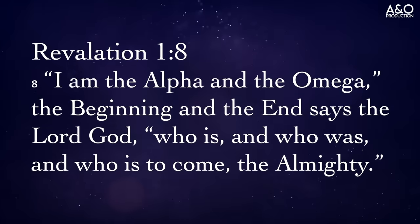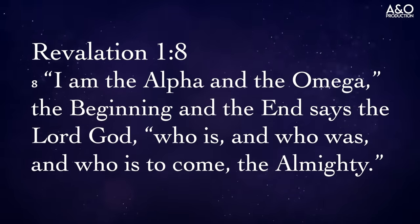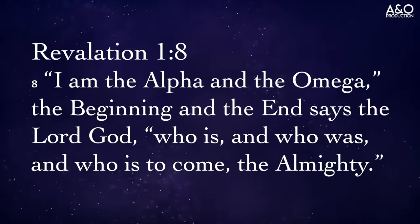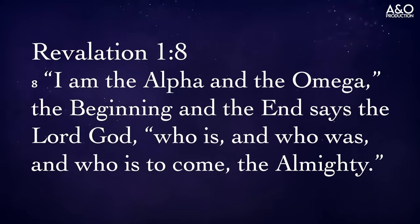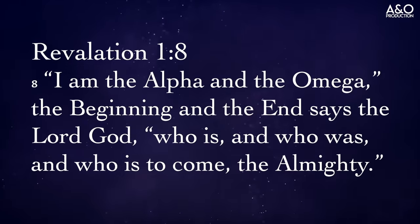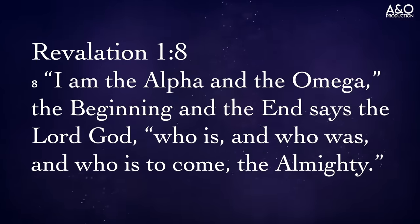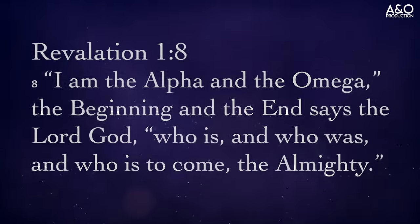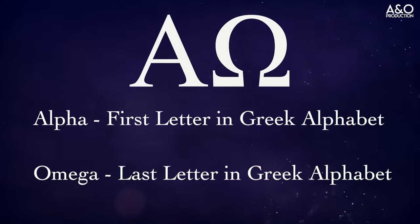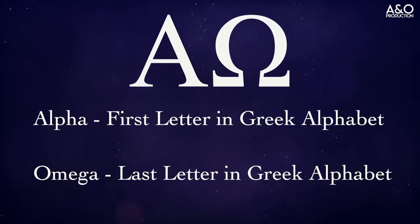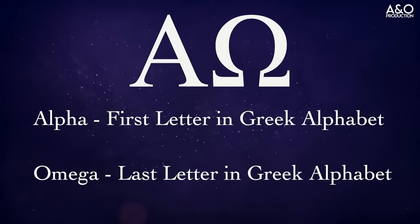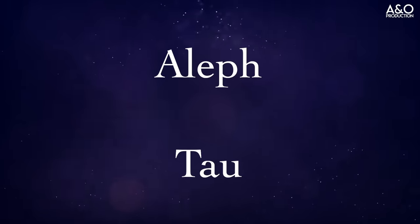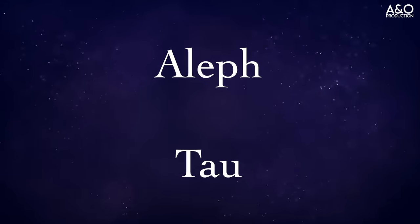Now for the claim that Jesus made of Himself. This claim comes from the book of Revelation. Jesus declares in Revelation chapter 1 verse 8: 'I am the Alpha and the Omega, the beginning and the end,' says the Lord, 'who is and who was and who is to come, the Almighty.' Of course, Alpha and Omega are the Greek words for the first and last letters of the Greek alphabet. If Jesus said this in Hebrew, He would have said, 'I am the Aleph and the Tav' — again, the first and last letters of the Hebrew alphabet.